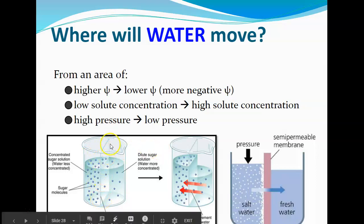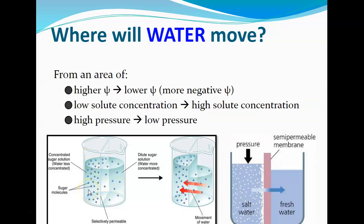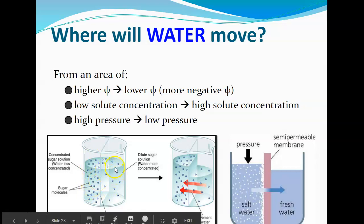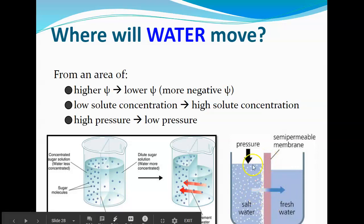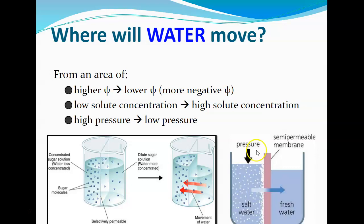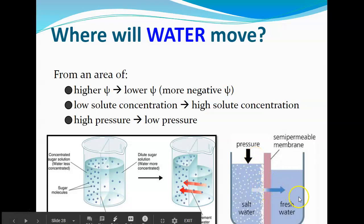Here's an example: a beaker with a selectively permeable membrane. On the left, there's a high concentration of sugar and low water concentration. On the right, there's high water potential and low solute. Water naturally moves from where there's more water to where there's less. Similarly, with salt water and fresh water through a semi-permeable membrane, the high solute on the salt water side means lower water potential, so water moves from the fresh water side to the salt water side.